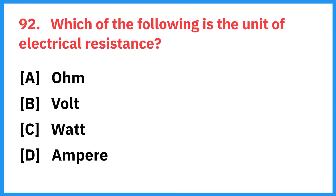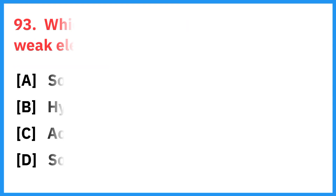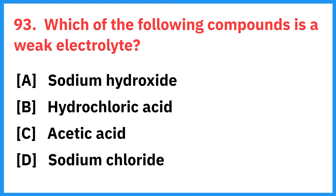Which of the following is the unit of electrical resistance? Right answer is ohm. Which of the following compounds is a weak electrolyte? Right answer is acetic acid.